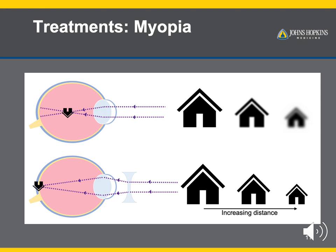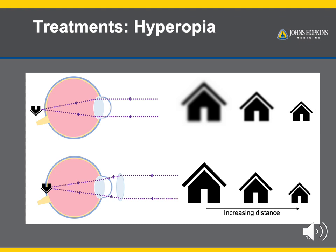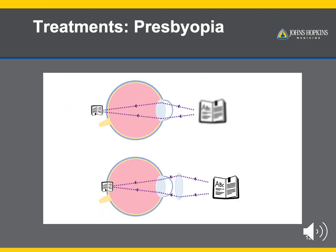For example, in myopia, because the focusing power of the eye is too strong, we add a diverging or minus lens to allow the light to spread out more before reaching the eye, balancing out the extra focusing power. In hyperopia, we do the opposite and add a converging or plus lens to help the eye focus the light a little bit more. Similarly, with presbyopia, we add a converging plus lens to compensate for the loss of focusing power of the hardened lens, so that light focuses a little sooner as it reaches the retina.